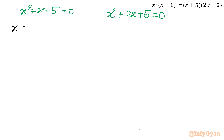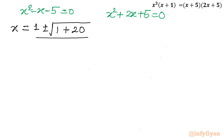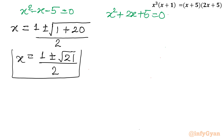Applying the quadratic formula to the first equation x² − x − 5 = 0: x equals minus b, so 1, plus or minus square root of b² − 4ac = 1 + 20 = 21, divided by 2a which is 2. So x = (1 ± √21) / 2. These are two real solutions.